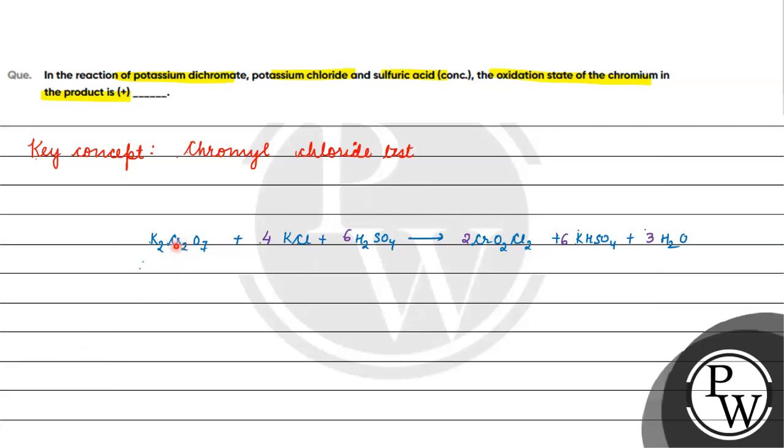Let's verify the balancing: chromium is 2 on both sides, potassium is 6 on both sides, chlorine is 4 on both sides, sulfur is 6 on both sides, hydrogen is 12 on both sides, and oxygen is 31 on both sides. The equation is balanced.